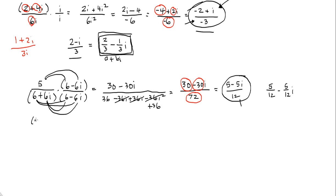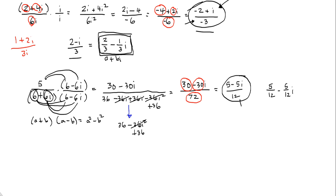Let's also talk about the difference of squares shortcut. What we really had in the denominator was a difference of squares: all you do is square both terms and subtract. 6 squared is 36, and 6i squared is minus 36i squared, which changes to plus 36, giving 72. All you're really doing with difference of squares is skipping the elimination of the middle two terms — it's much easier and faster.